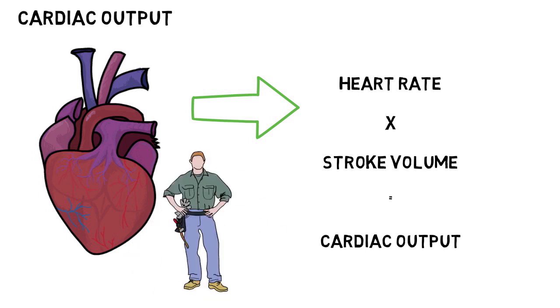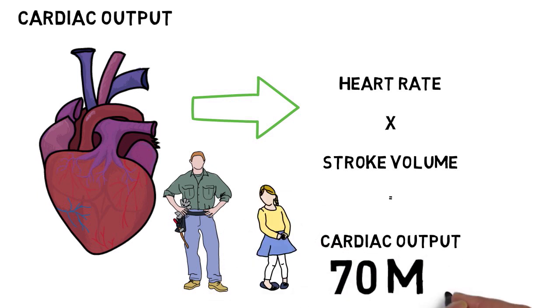The stroke volume differs from person to person, but the average healthy man will have a stroke volume of 70 milliliters.